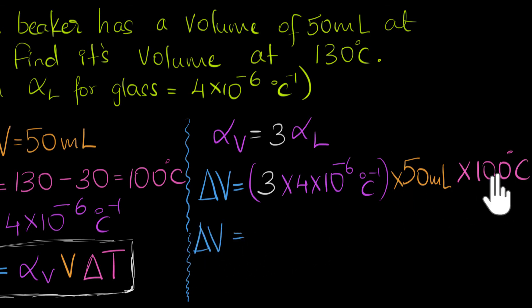Let's see, degree Celsius and degree Celsius inverse cancels. And so what we end up with is 3 times 4, that's 12, 12 times 50, 12 times 5 is 60. Let's just write that down. So we have 12 times 50 times 100.